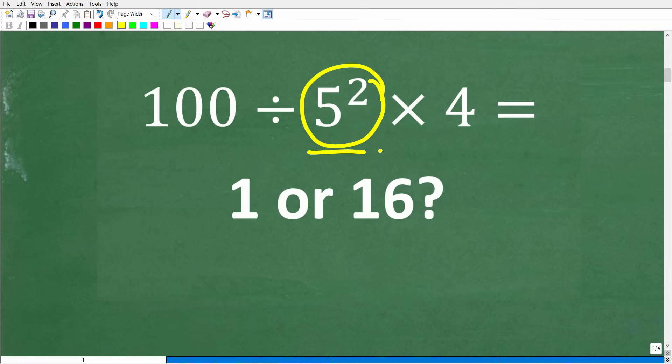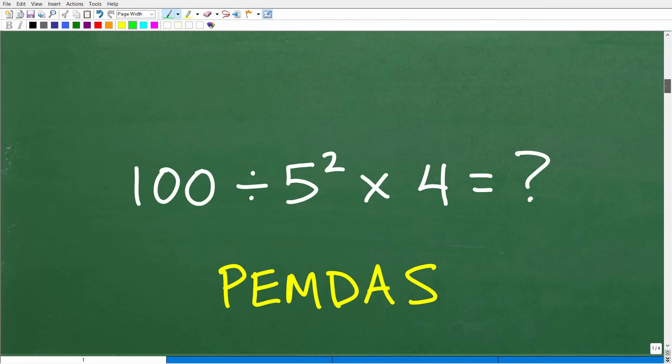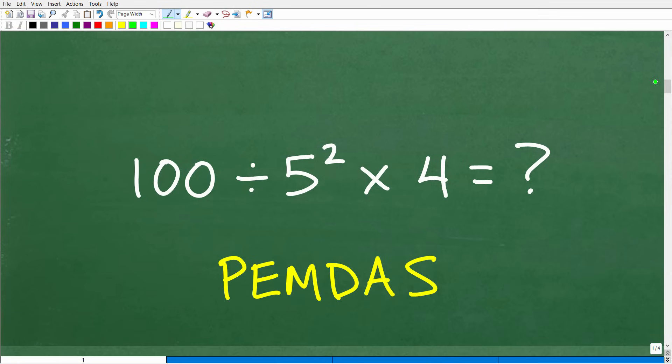And this is probably the most common reason people get basic math problems wrong. You did this in the wrong order. Now, this is good if you did this as your first step to solve this problem, 5 squared. But then you went on to do multiplication. That is incorrect. What you need to do is the division first.